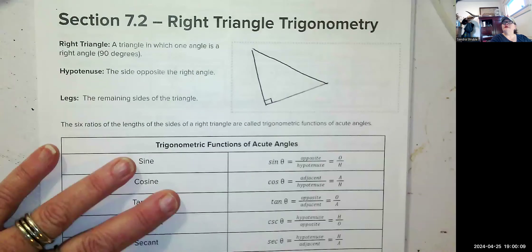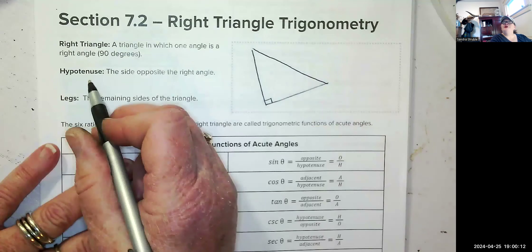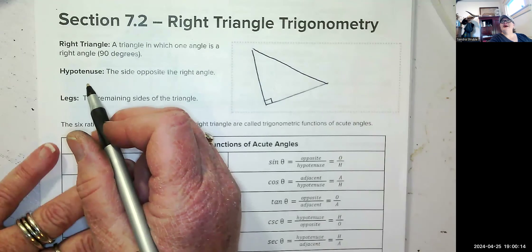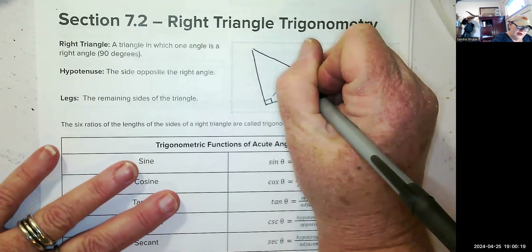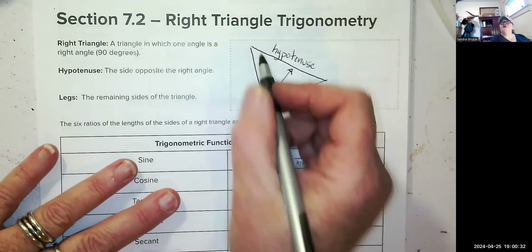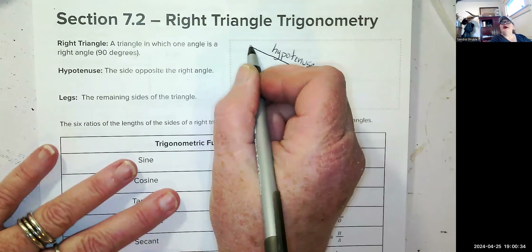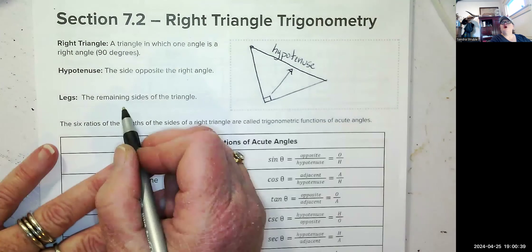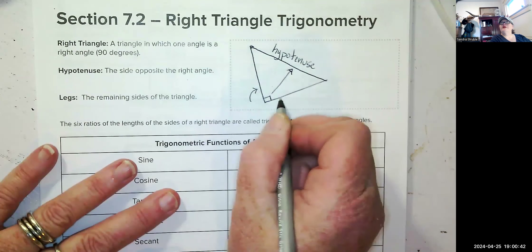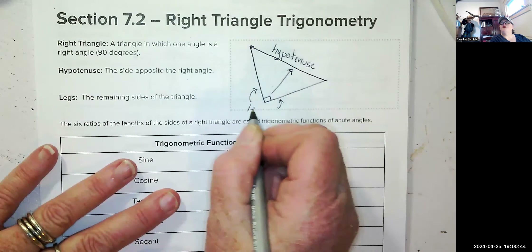90 degrees is the angle right here. The hypotenuse is always the side opposite that right angle — so this is the hypotenuse. It's also the longest side because 90 degrees is the largest angle; since a triangle's angles add up to 180, the other two must add up to 90 themselves. The other two remaining sides are called the legs.